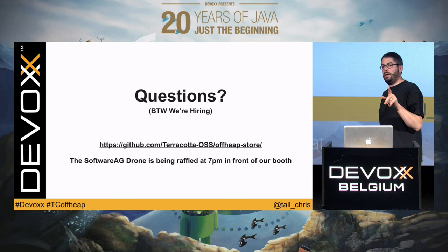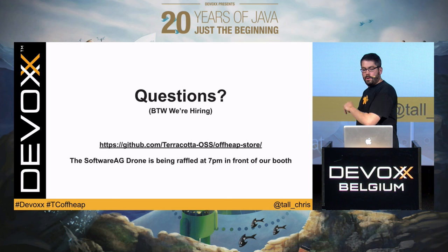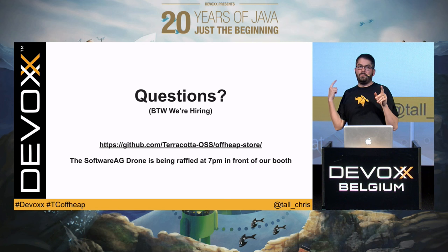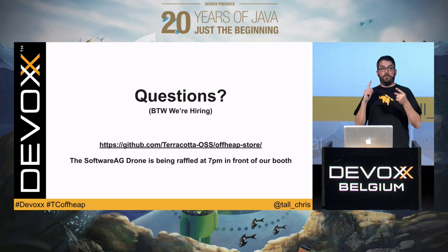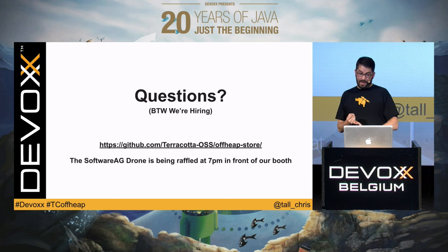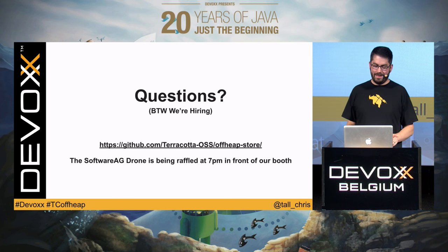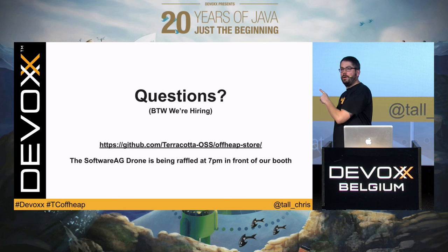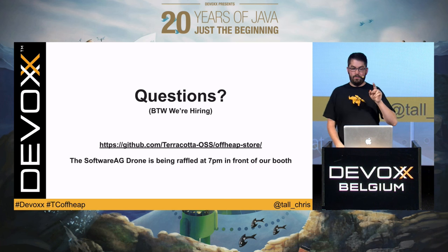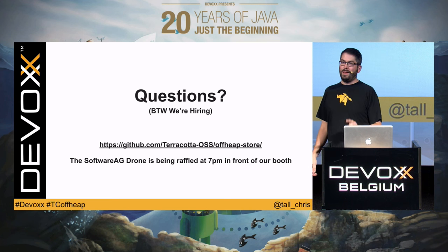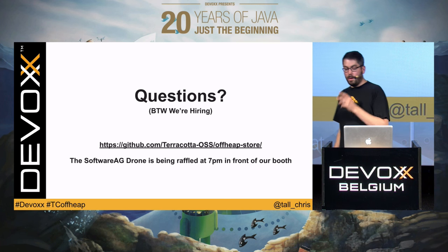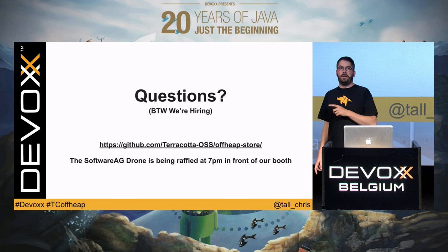Questions? By the way, we're hiring — doing a bunch of fun stuff with off-heap and fancier off-heap data structures. We may even start using unsafe at some point. If you're interested in very low-level Java development, distributed systems, off-heap solutions, data modeling, Java 8 streams, or lambdas, come and talk to me. That's the GitHub URL. The drone at our booth is being raffled at 7 p.m. in front of our booth.